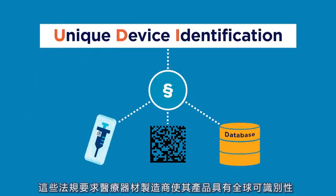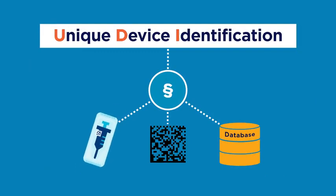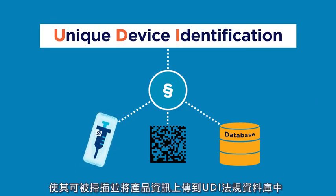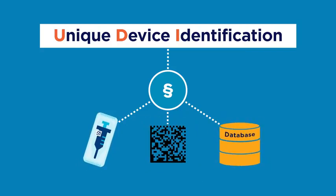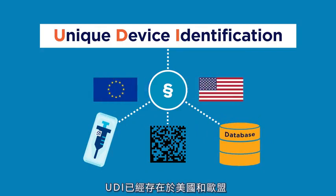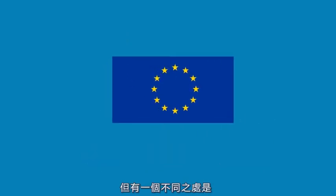These regulations require medical device manufacturers to make their products globally identifiable, make them scannable, and include the product data in a UDI regulatory database. UDI already exists in the United States and in the European Union, but with one difference.